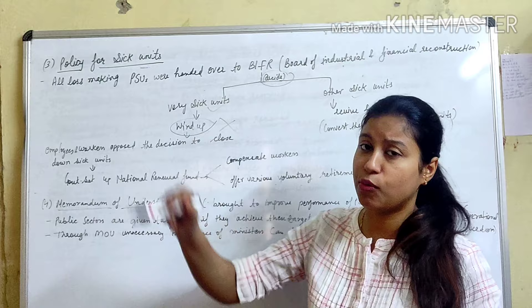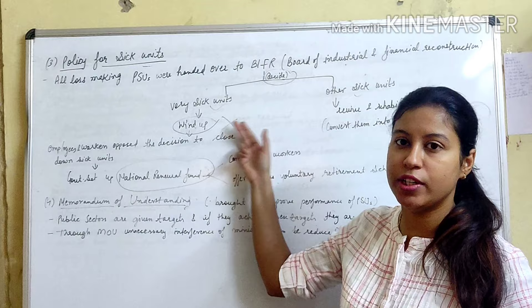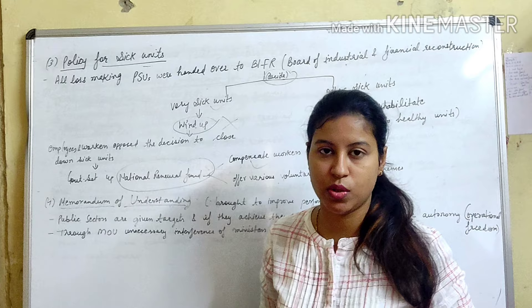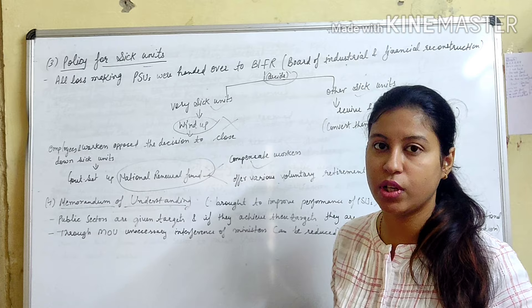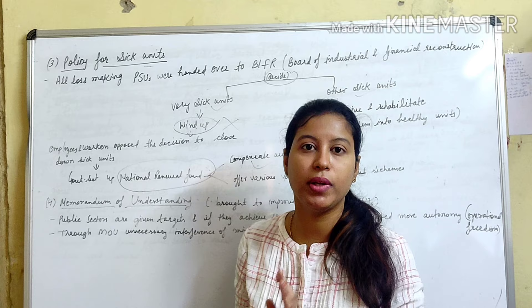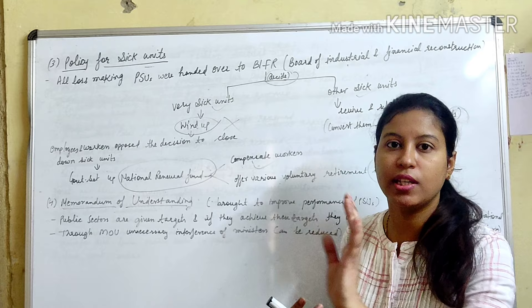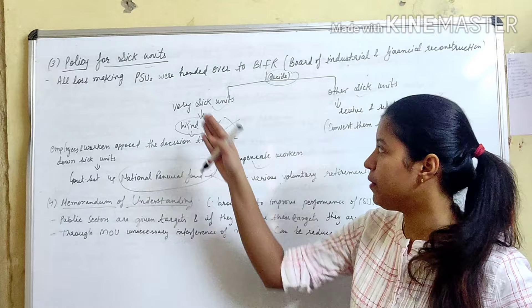Because workers and employees opposed the decision to close down sick units, the government set up the National Renewal Fund. This fund would compensate workers and employees who lost their jobs when units were shut down. It also offered voluntary retirement schemes — if a worker chose voluntary retirement, they would be provided benefits through this scheme.